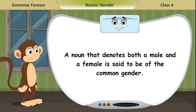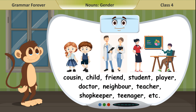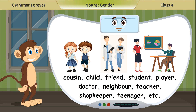A noun that denotes both a male and a female is said to be of the common gender. Examples: cousin, child, friend, student, player, doctor, neighbor, teacher, shopkeeper, teenager, etc.